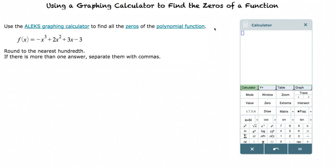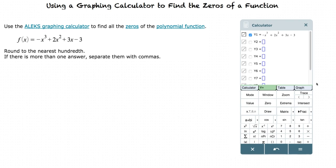Use the ALEKS graphing calculator to find all the zeros of the polynomial function f(x) = -x³ + 2x² + 3x - 3. We can go to the y equals button and type in our function. Now we click graph to see a graph of the function.